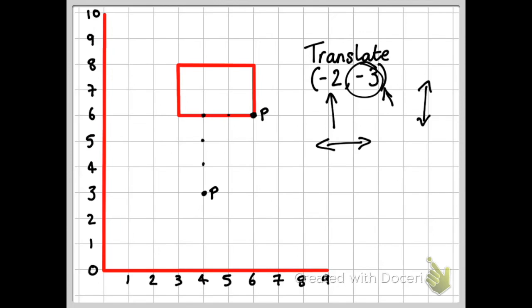Now, once I've translated that vertex, I should then be able to figure out where the new shape will be. Because I can see that above P, the line goes up two, and to the left of P, it goes across three. And I should be able to make my new shape.